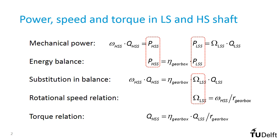Substituting this expression for the rotational speed in the energy balance leads to a relation between the torque in the high-speed shaft and in the low-speed shaft. This expression shows that the efficiency directly affects the torque in the high-speed shaft. This should not come as a surprise — the losses in the gearbox are caused by friction, which leads to a reduction in torque on the outgoing shaft.